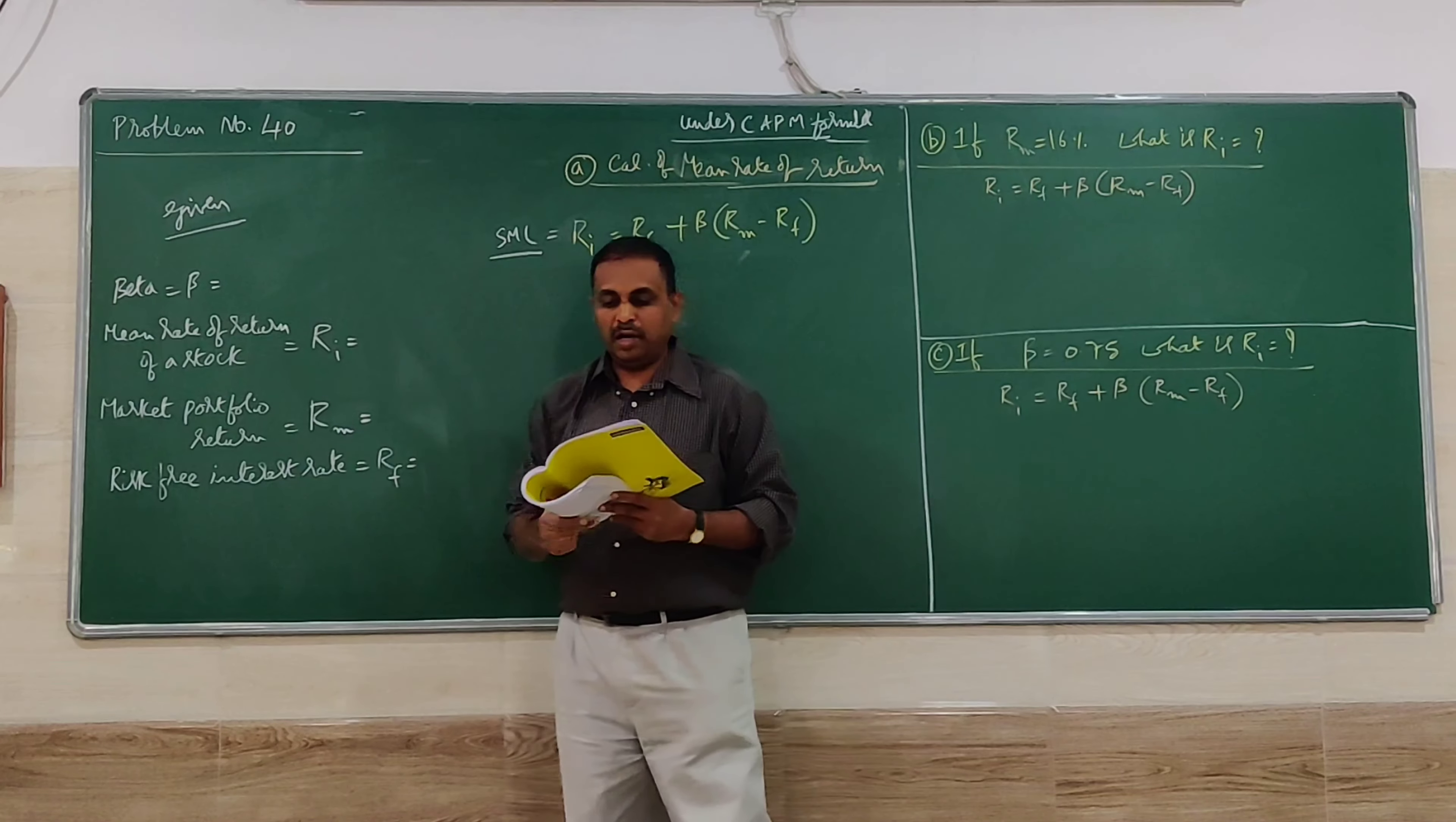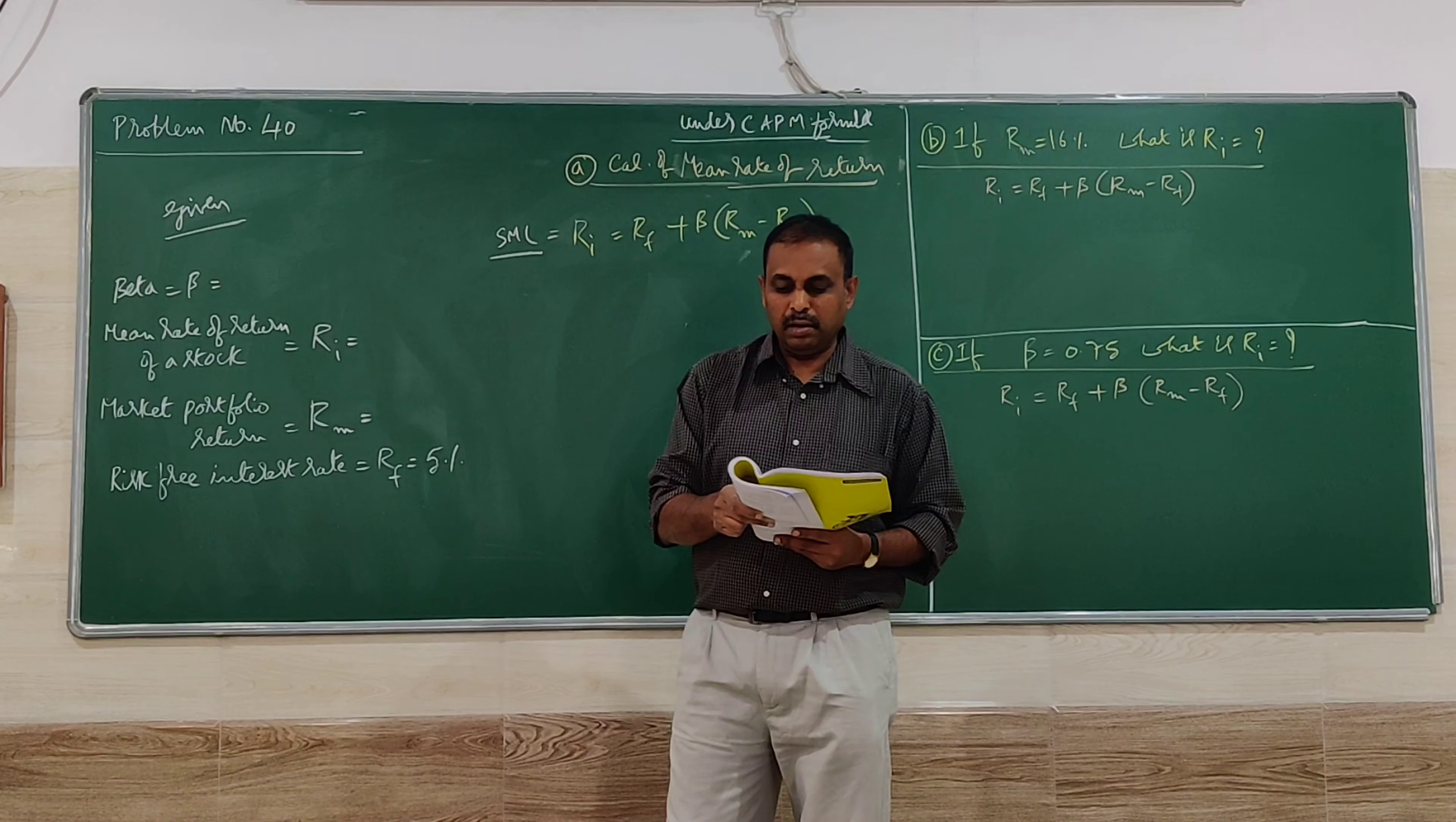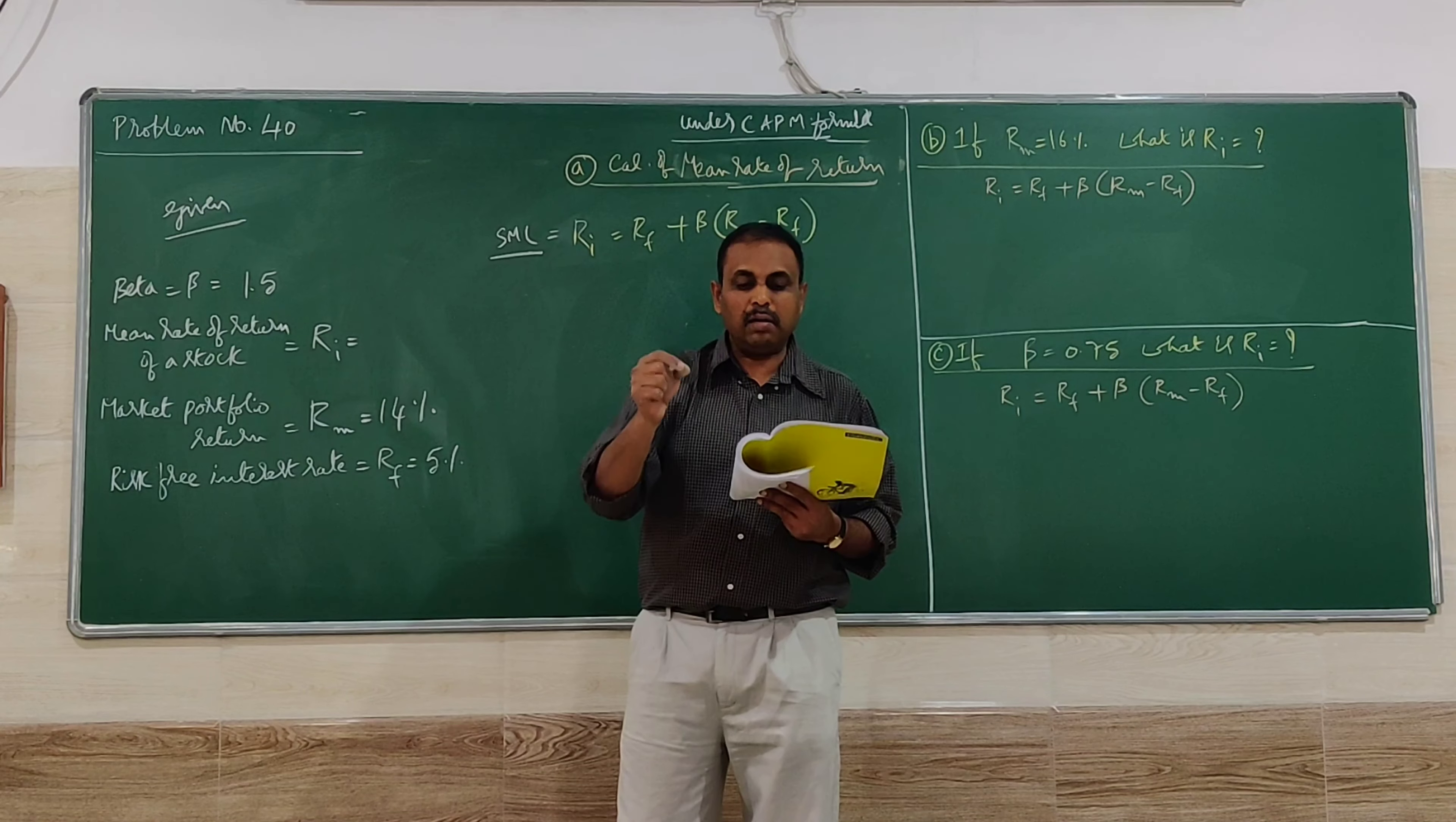Problem number 14: If the market has a risk-free rate of 5% (RF = 5%) and market return is 14% (RM = 14%), and beta is 1.5 for a particular security, determine the expected return for the security.